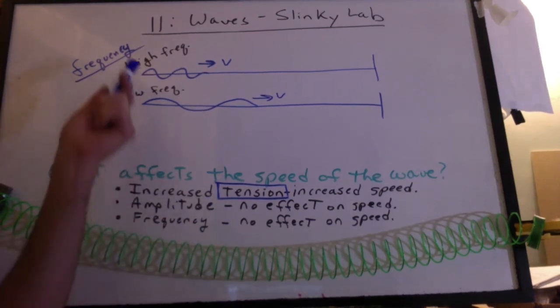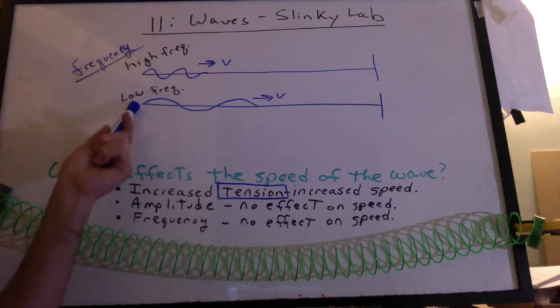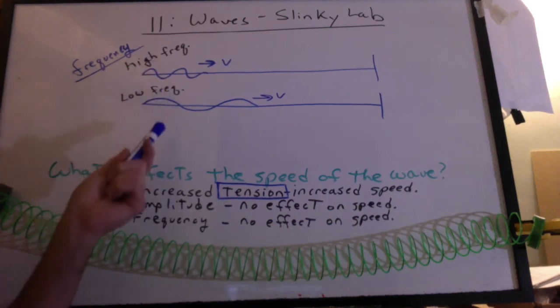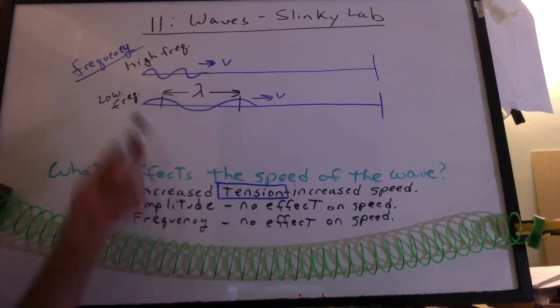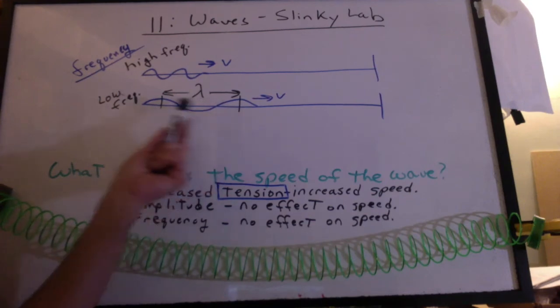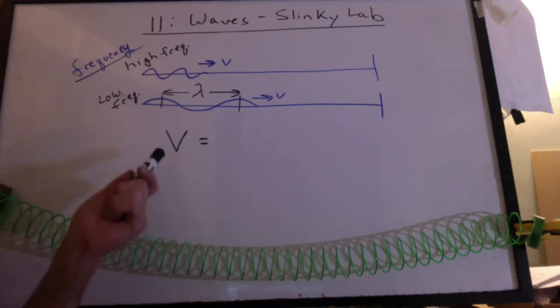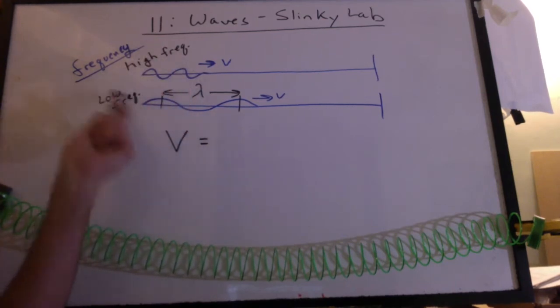You might notice that when we do high frequency and then low frequency, there is something that's changing. What is it? The waves seem to be longer. What do we call that? That's the wavelength. The wavelength is the distance from the crest to the crest.